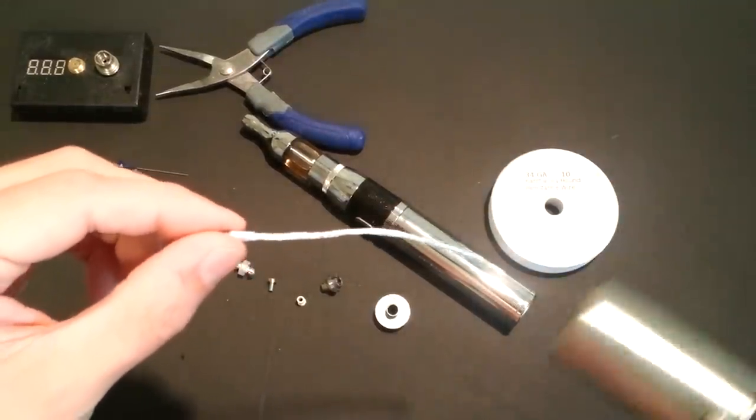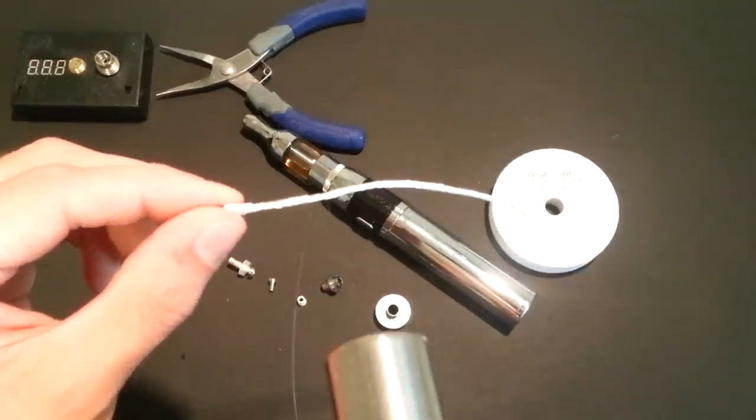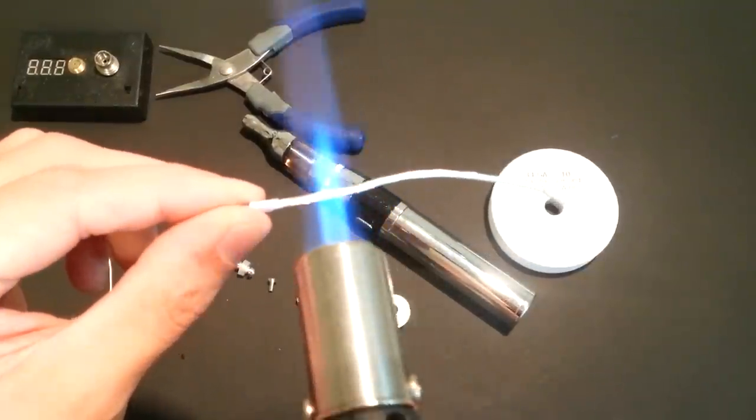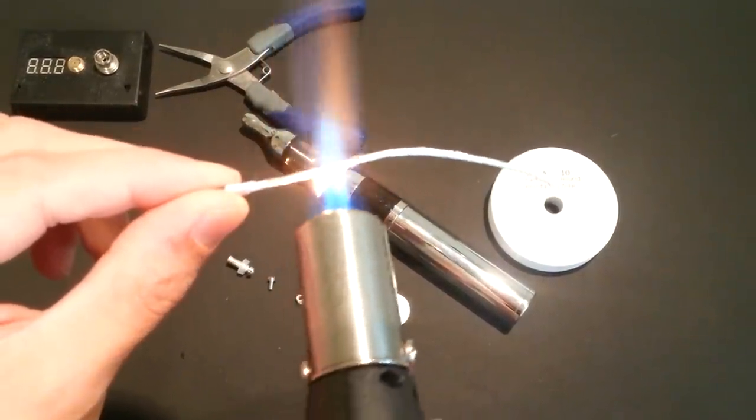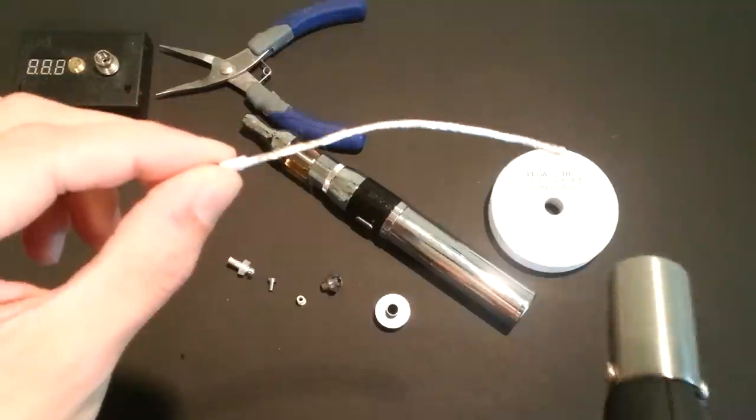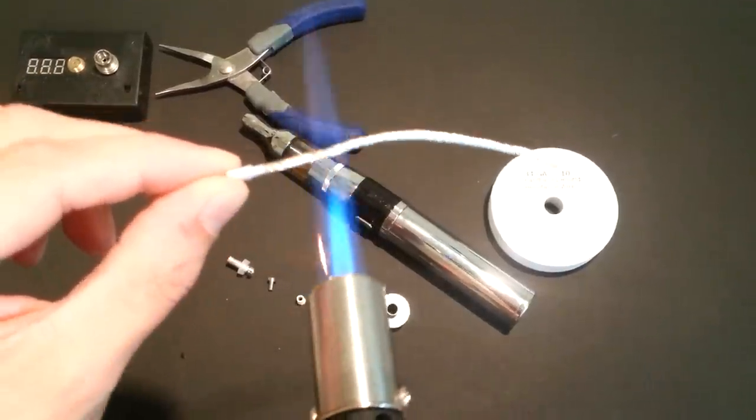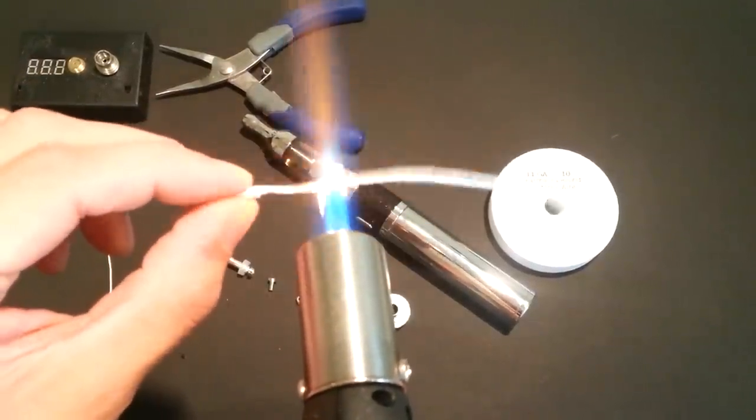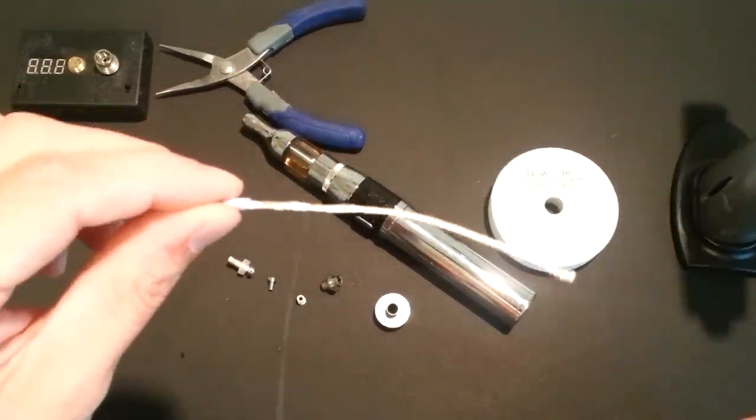So what we're going to do is we're going to take our chef's torch. You could also use maybe a torch lighter. And I'm going to run it. Just like that. I'm going to do two passes. We want all of the coil to glow orange. And there we are.